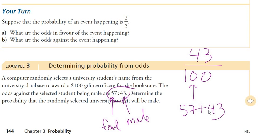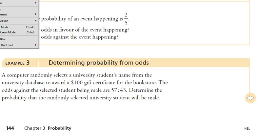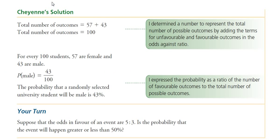Suppose the odds in favor of an event are 5 to 3. Is the probability greater than or less than 50%? The probability is 5 out of 8 — is that greater than 50%? Yes. You go 5 divided by 8 = 0.625, or you say 4 out of 8 is 50%, so 5 out of 8 is more than 50%.